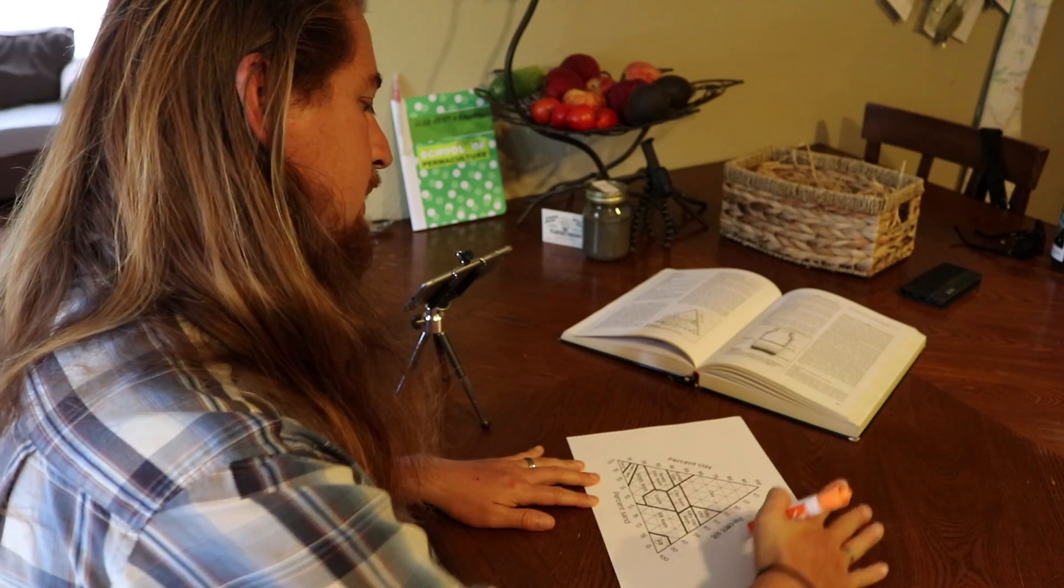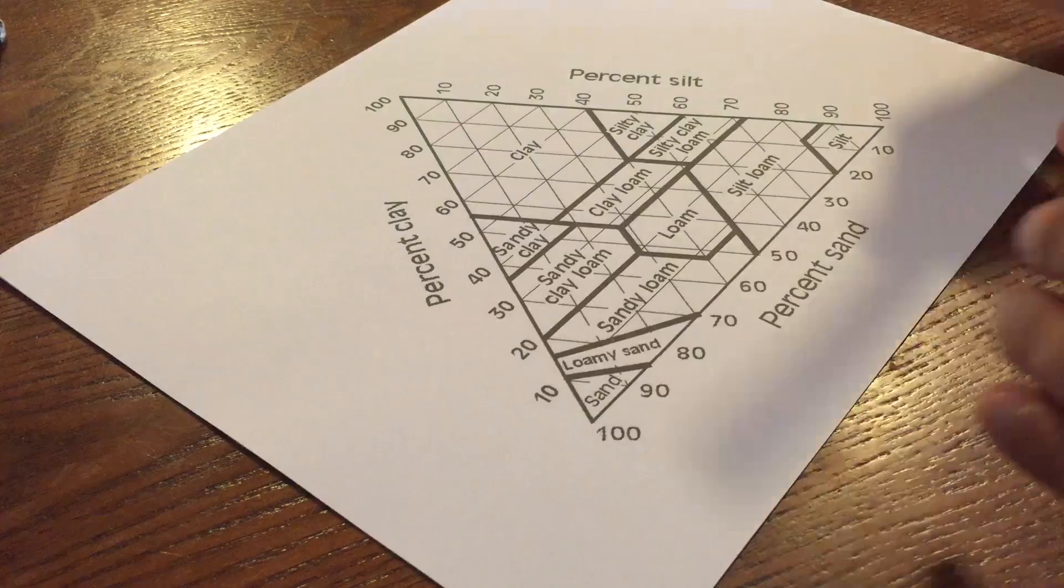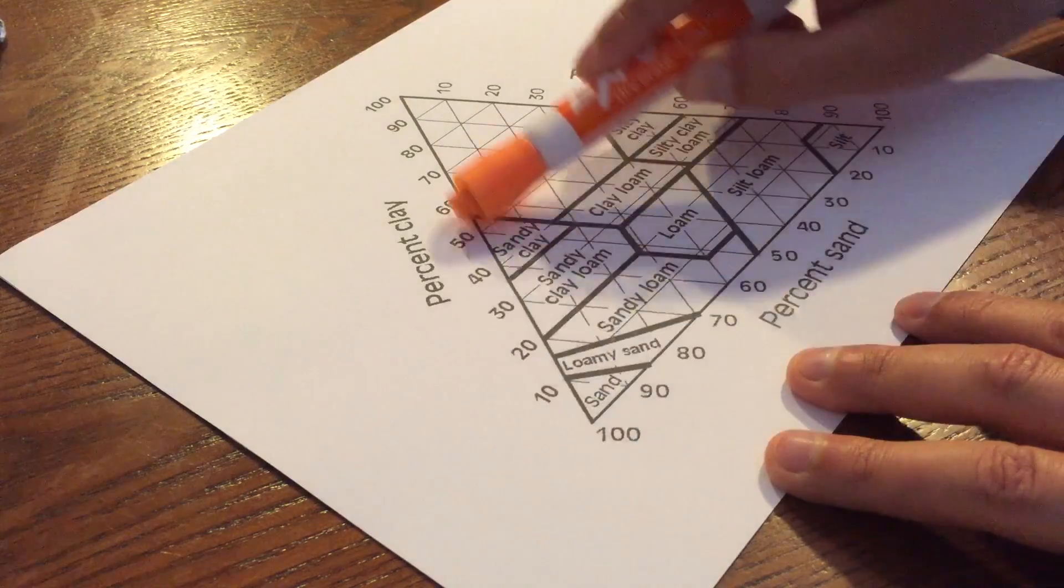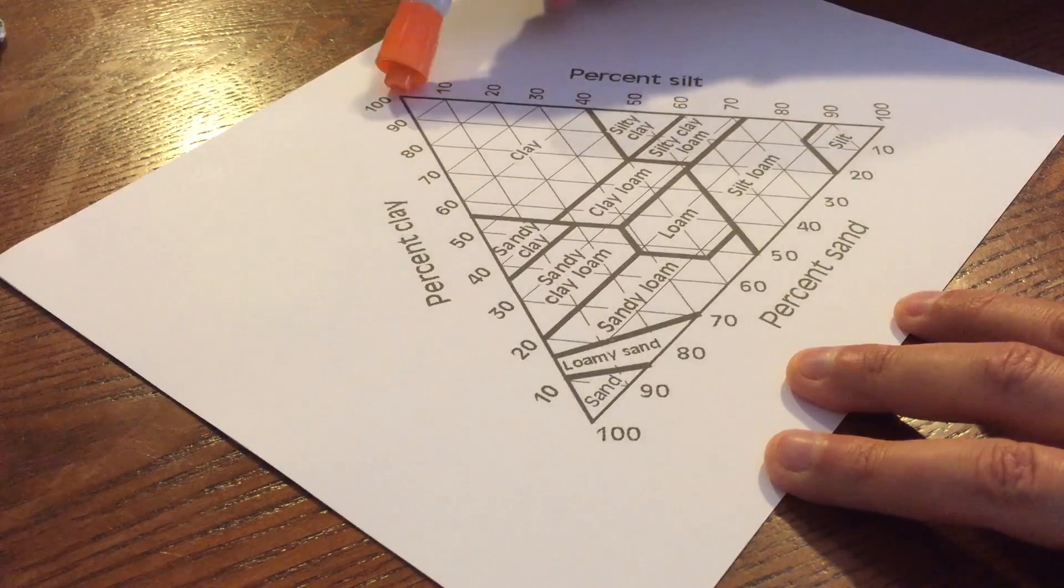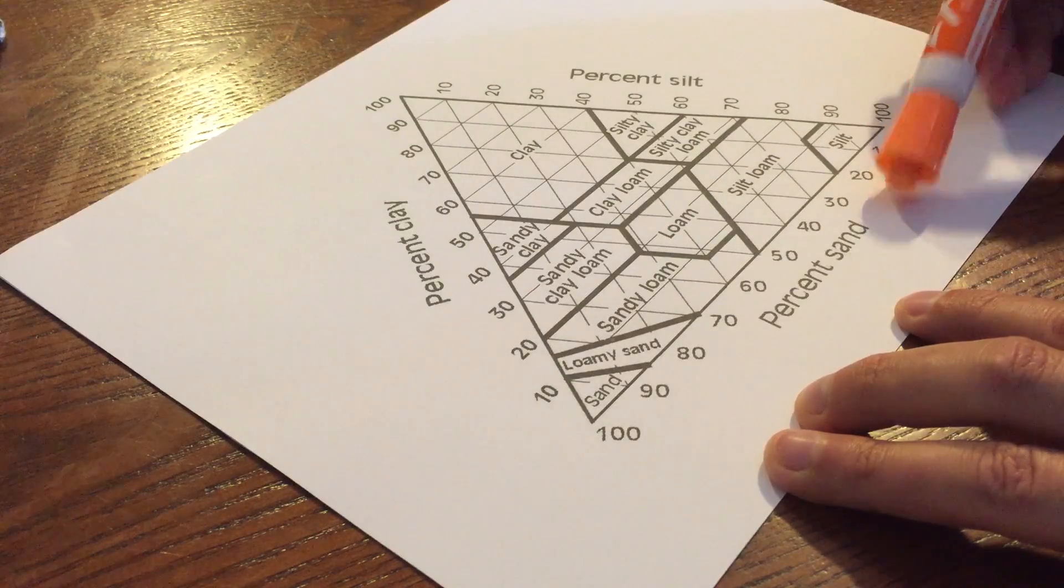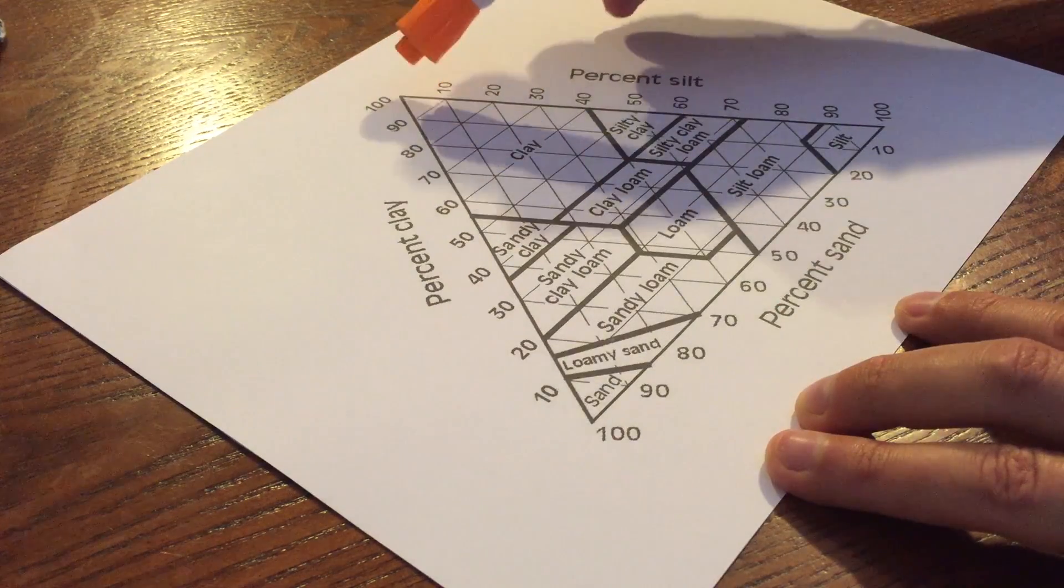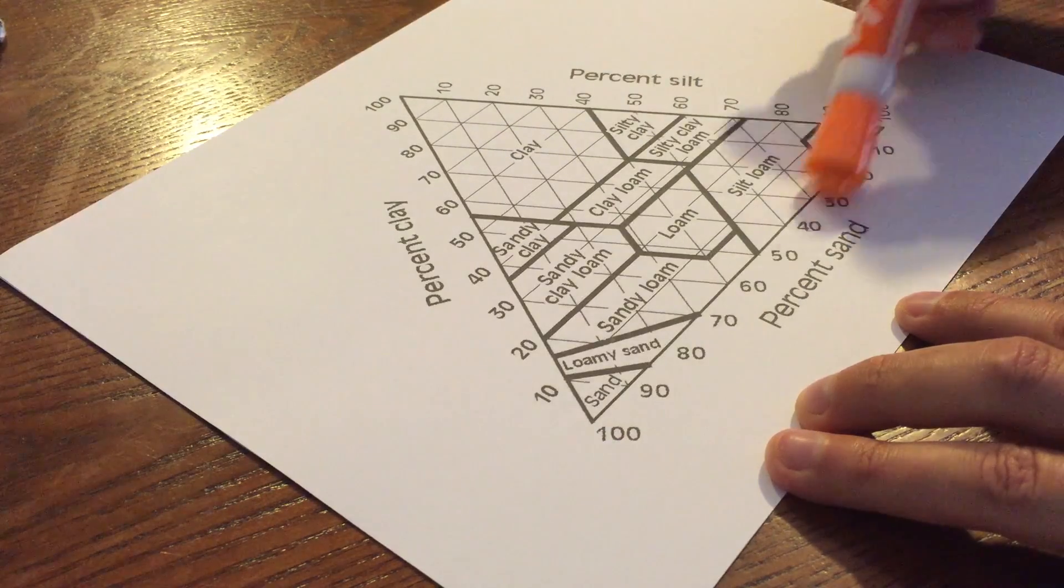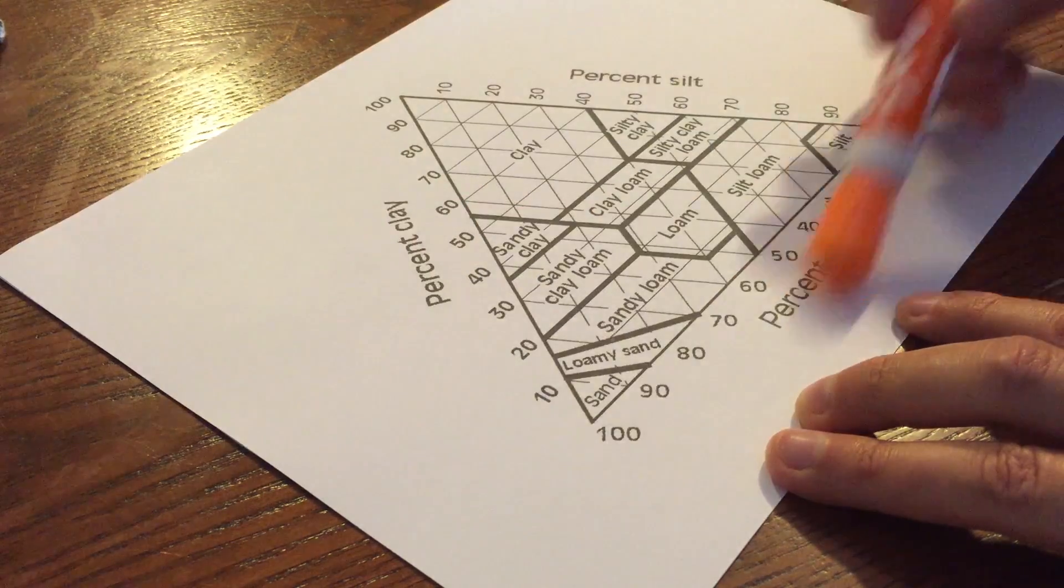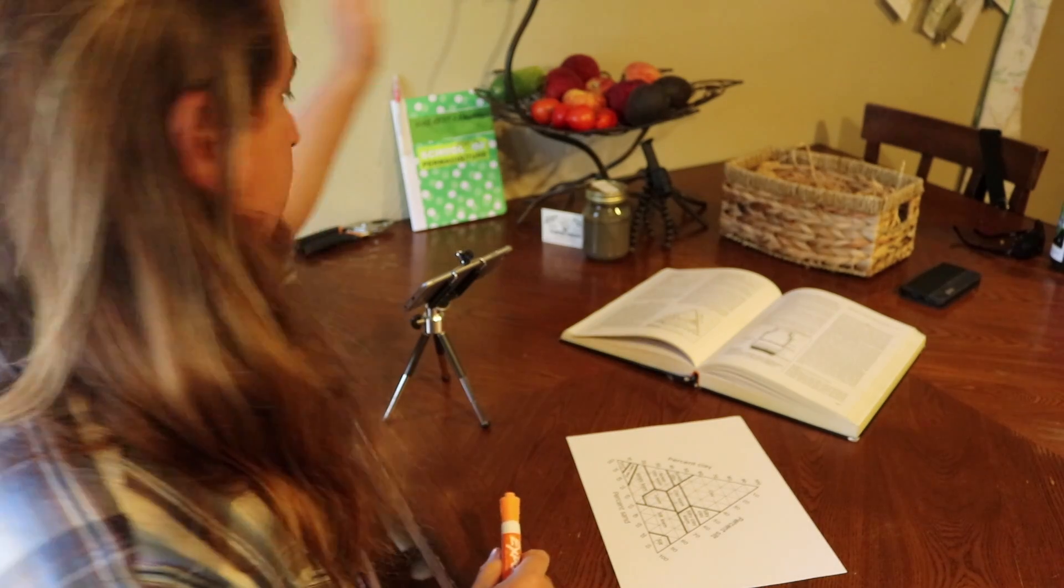They've already put down the blueprint for it, you just have to fill in what is what. This side of the triangle is clay, this side is silt, and this side is sand. If you notice, we start here at 10 up to 100, then 10 down to 100, and then 10 across to 100. So it's kind of like a triangle circle.